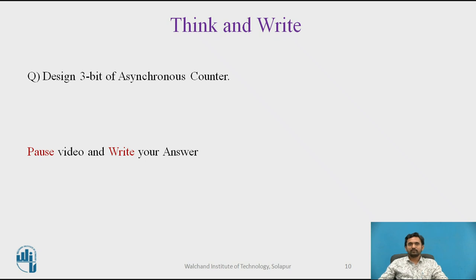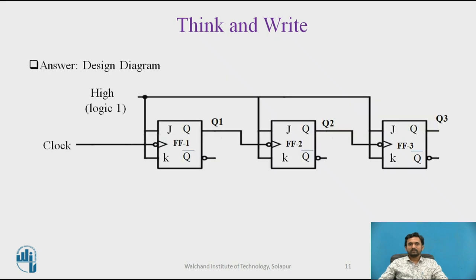Now, the design of a 3-bit asynchronous counter. Please pause the video and write your answer. In a 3-bit ripple counter, 3 flip-flops are used. Since n = 3, the counter can count up to 2³ = 8 values. The circuit shown consists of 3 JK flip-flops implementing a 3-bit mod-8 asynchronous counter. The overall propagation delay time is the sum of all individual delays.